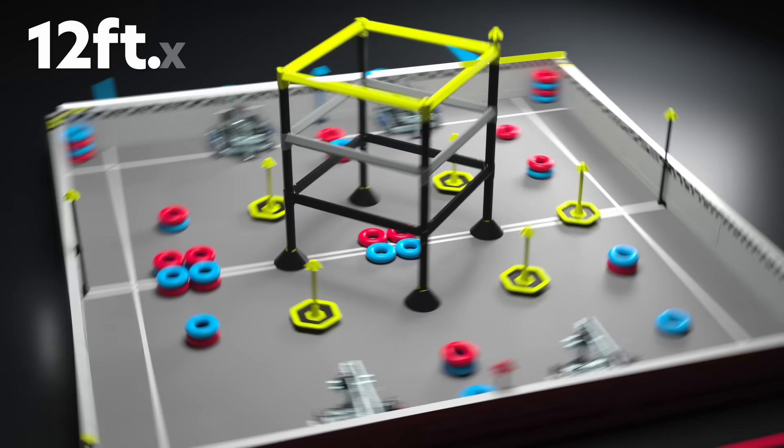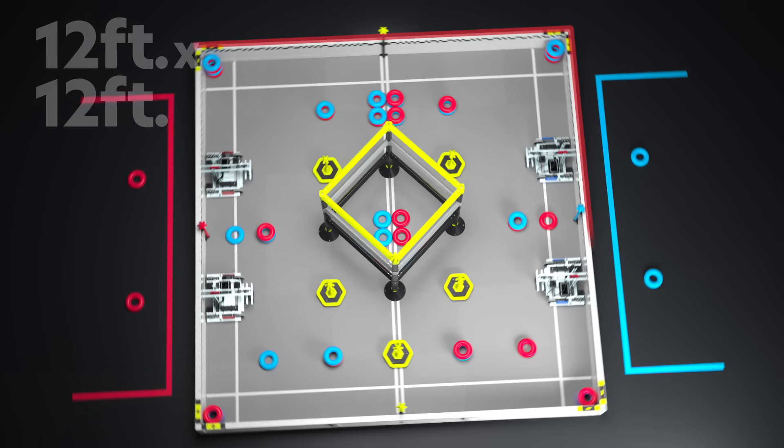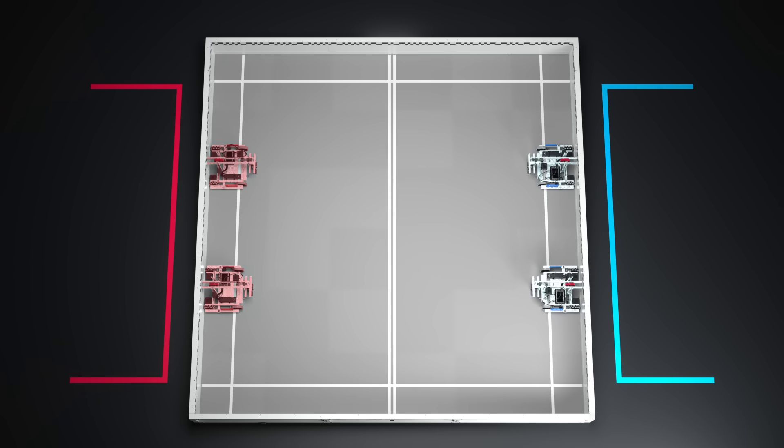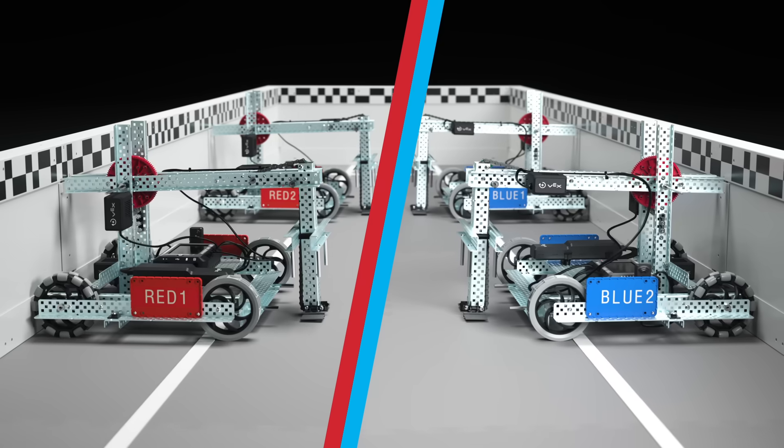High Stakes is played on a 12 foot by 12 foot field by two alliances, one red and one blue, made up of two teams each.